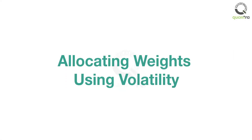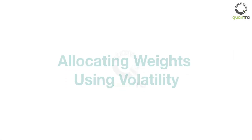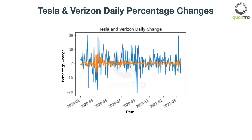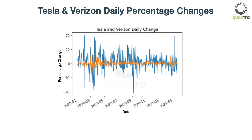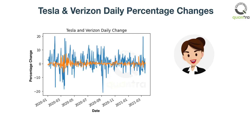Welcome to this video lesson on allocating weights using volatility. John was looking at the percentage returns of both Tesla and Verizon. Mary had told him he should allocate less capital to the highly volatile assets. Since Tesla is more volatile than Verizon, he should allocate less capital to Tesla and more capital to Verizon.